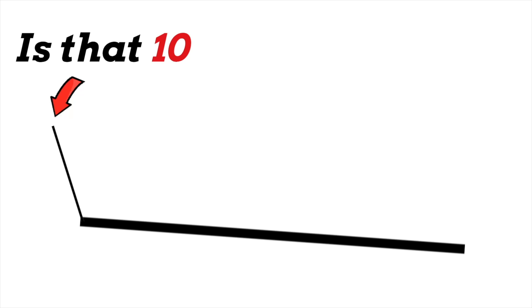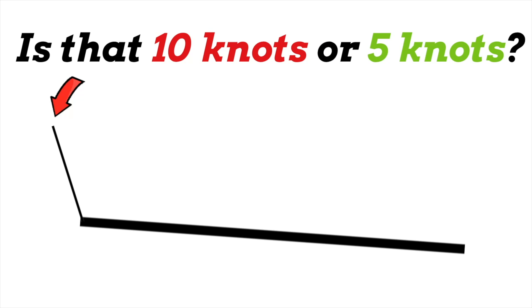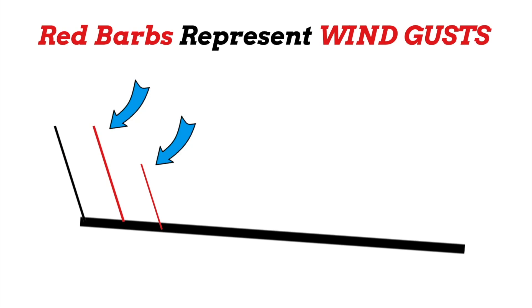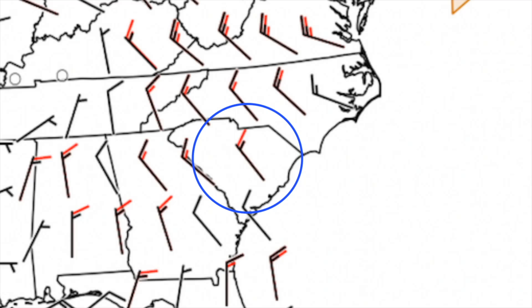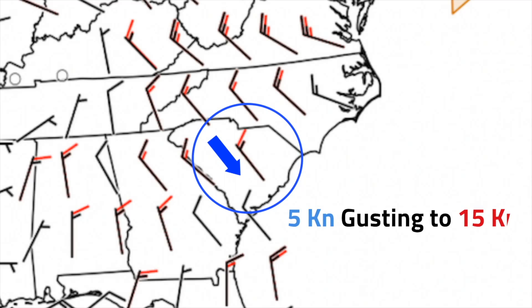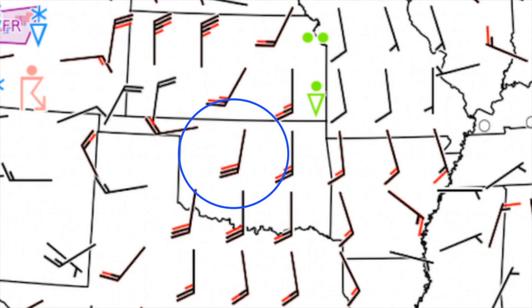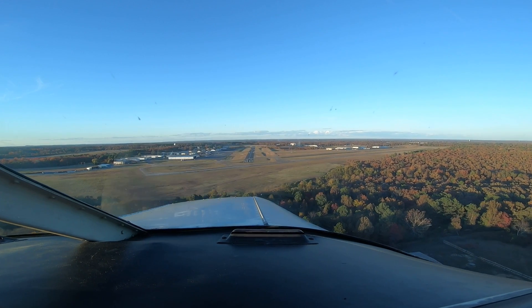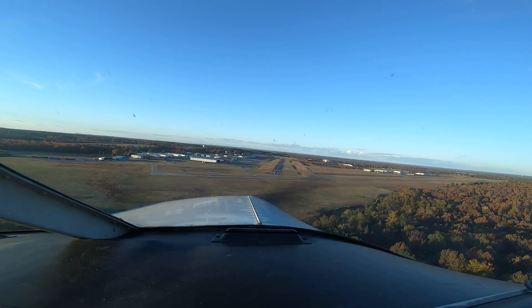For the 10-knot line and the 5-knot line, it might be tough to tell the difference when there's only one line. That's why if there's only 5 knots of wind, they don't put the line all the way at the end of the flagpole. On some of these charts, you may see red flags on the wind barbs — these represent gusts. For example, the winds in South Carolina are going to be out of the northwest at 5 knots gusting to 15. Here in the Oklahoma City area, winds will be out of about 190 at 20 knots gusting to 30. Do you have any strategies for combating gusty winds on landing? Let me know in the comments below.